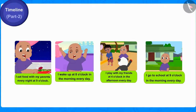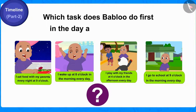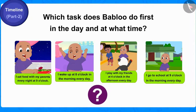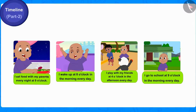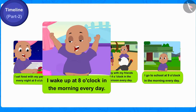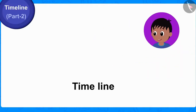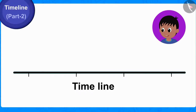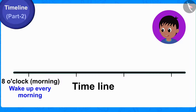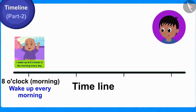Children, can you tell out of these 4 tasks, which task does Bablu do first in the day and at what time? Well done children, you have found the right answer. Bablu wakes up every day at 8 o'clock in the morning. Raju drew a timeline in Bablu's diary and wrote 8 o'clock in the morning as the very first task. He told Bablu that he can write 'wake up every morning' under this, or if he wants, he can also draw a picture for it.